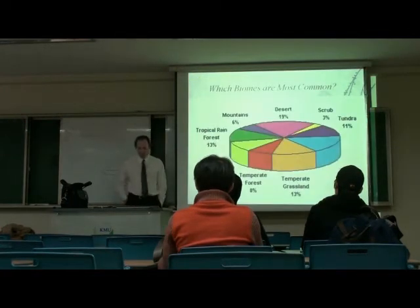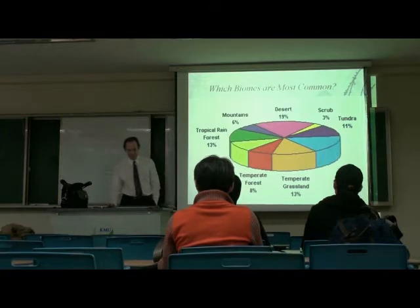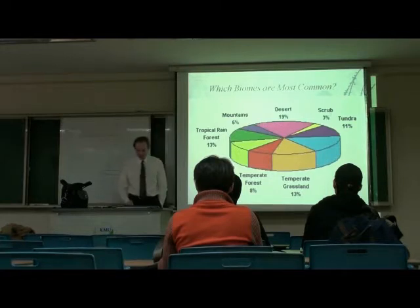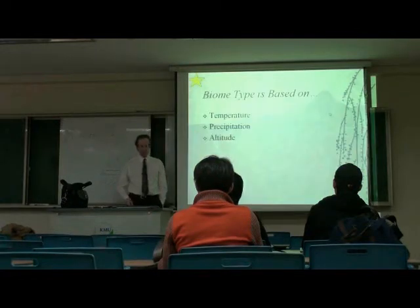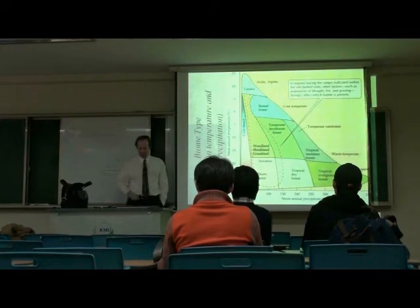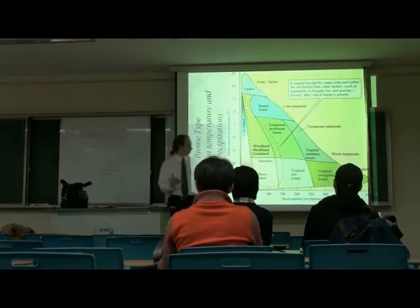Which biomes are the most common? It's pretty even all around the world. Except for scrub — scrub is a tiny percentage. But if we think of the differences in temperature, precipitation, and altitude, with just those three variables you can analyze the whole world.